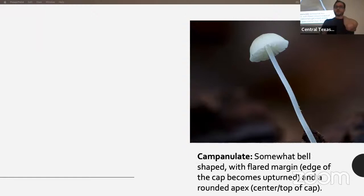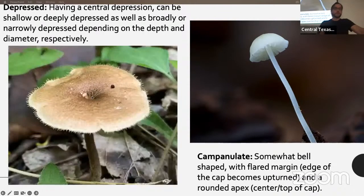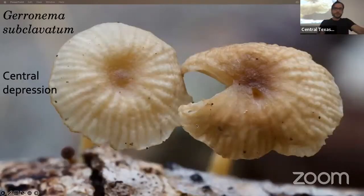Campanulate means somewhat bell-shaped with a flared margin — the end of the cap usually becomes upturned with a rounded top, so it won't be pointy, flat, or depressed. Like this Lentinus auricularis with a pretty clear central depression — those can be shallow, deep, broad, or narrow. Here's another central depression example: Gerronema subclavatum.